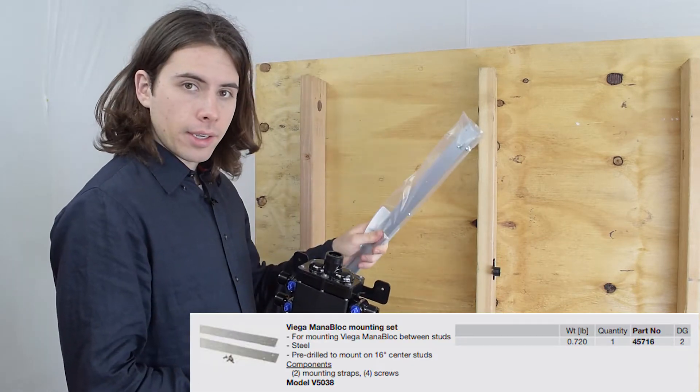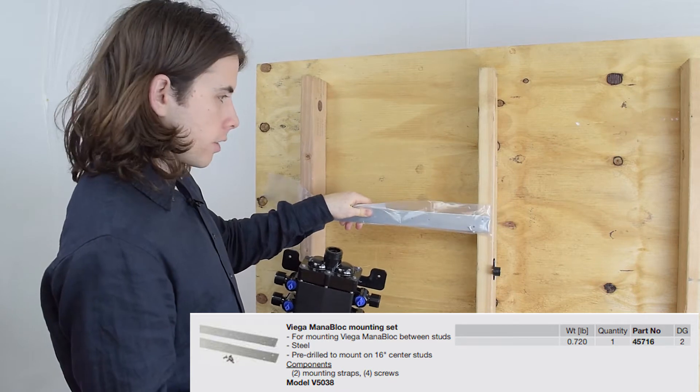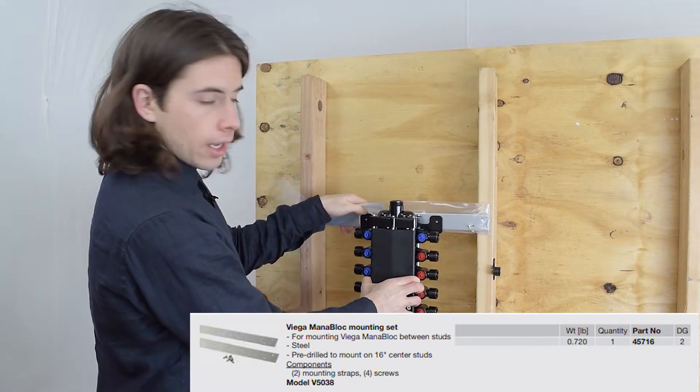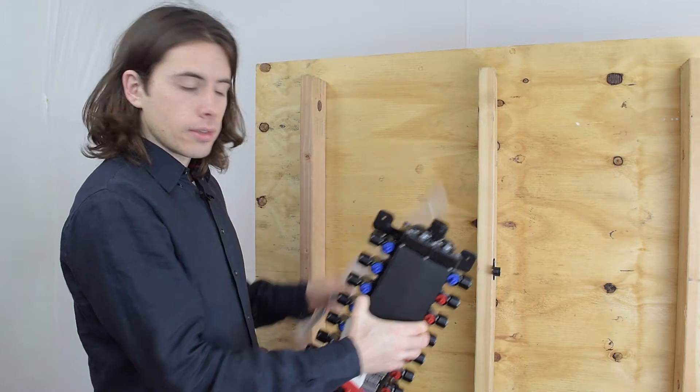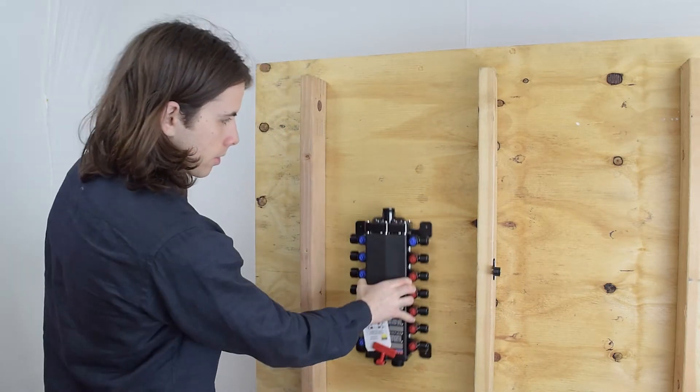You can have brackets right on the joists like this if you want to, and then install it here and have an access door to get to it. But to keep things simple, I'm just going to install it right here.